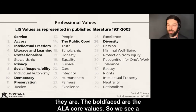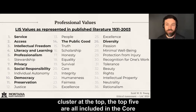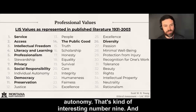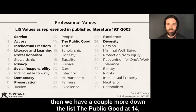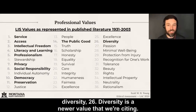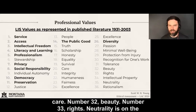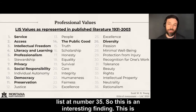The boldfaced values are the ALA core values. We see a cluster at the top — the top five all include core values. Then mixed in are stewardship and individual autonomy at number nine. The public good at 14th, diversity at 26. Diversity is a newer value we're citing. There are some interesting ones on the list: number 20 is care, number 32 is beauty, number 33 is rights, and neutrality is on the list at number 35.